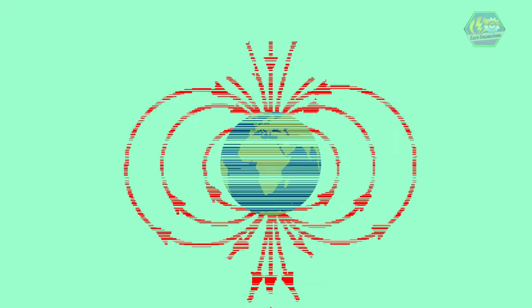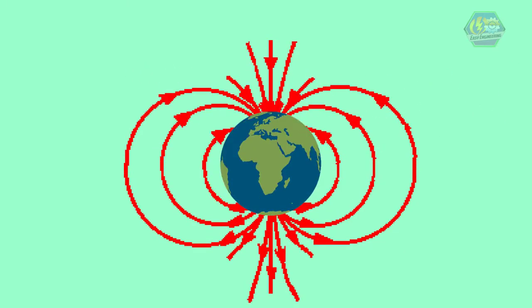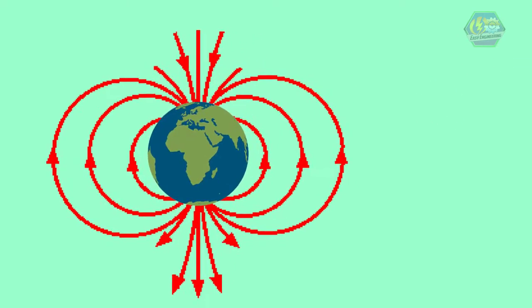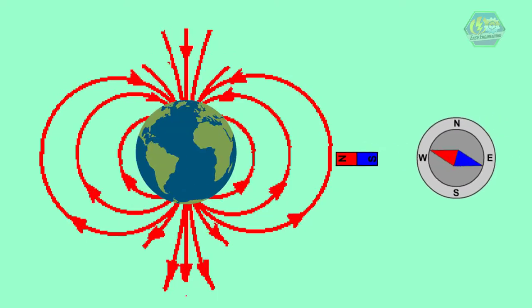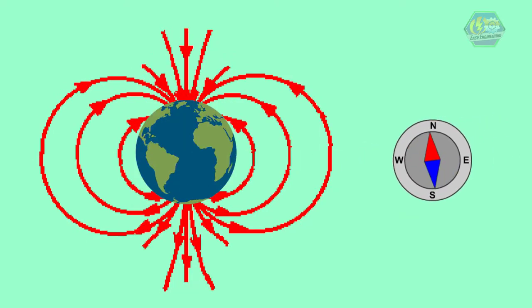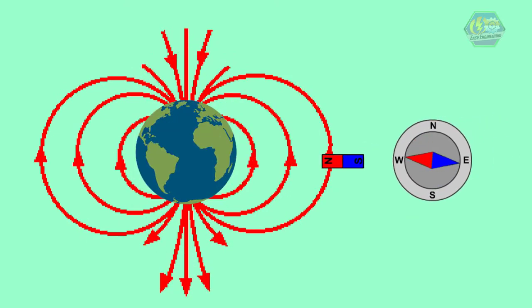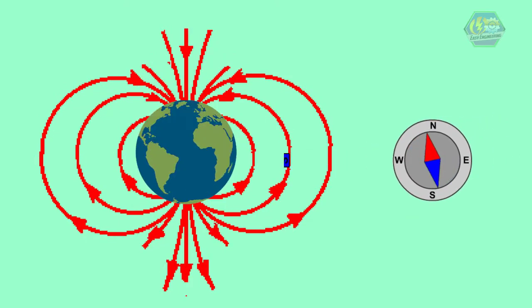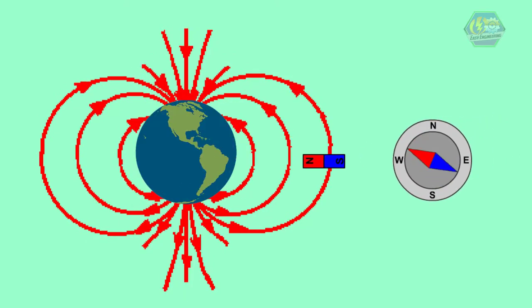There's also a magnetic field around Earth, which is why you can use a compass to figure out which way is north. The magnet in the compass aligns itself with the Earth's magnetic field.